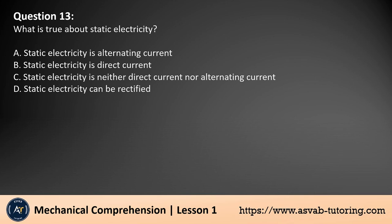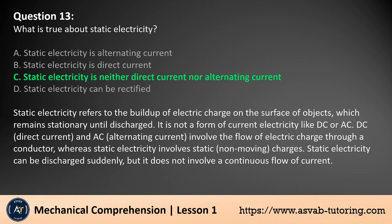Question 13. What is true about static electricity? A. Static electricity is alternating current. B. Static electricity is direct current. C. Static electricity is neither direct current nor alternating current. D. Static electricity can be rectified. The answer is C. Static electricity refers to the buildup of electric charge on the surface of objects, which remain stationary until discharged. It is not a form of current electricity like DC or AC. DC, direct current, and AC, alternating current, involve the flow of electric charge through a conductor, whereas static electricity involves static charges. Static electricity can be discharged suddenly, but it does not involve a continuous flow of current.